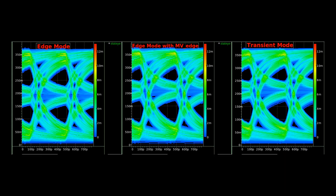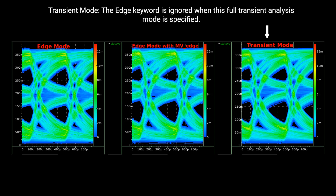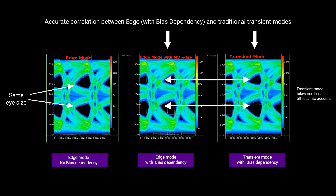Let's take a look at the STAT-I simulation results. The eye on the left is from running traditional edge mode without taking into account the non-linearities. The middle eye accounts for the fact that there is a non-linear or bias-dependent resistor in the system. The eye on the right is STAT-I transient mode, which runs full transient instead of edge mode for ultimate accuracy. The correlation is clear between the STAT-I transient and edge modes. In general, the benefit of edge mode is the ability to run millions of bits in a short time, whereas it becomes non-feasible to run in transient mode.